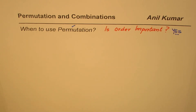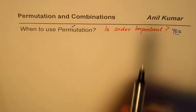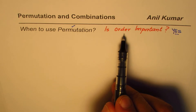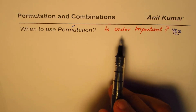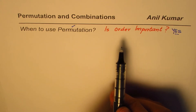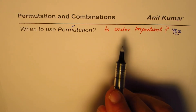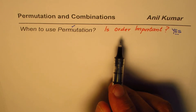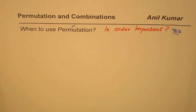The key question to decide whether we are going to use permutation or combination is the importance of order. So if I'm writing two numbers, let's say 2-3 and then 3-2, the order is important — 23 is twenty-three and 32 is thirty-two — and therefore in such cases permutation should be used.